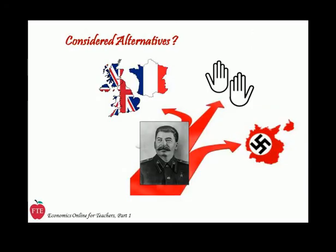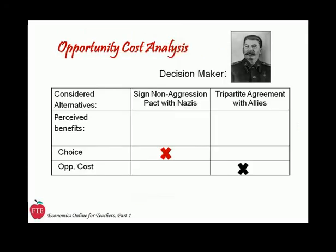While Stalin could have conceivably tried to keep the USSR out of the war entirely, he apparently didn't consider that one of his best alternatives. So in the late 1930s, he was simultaneously engaged in negotiations with Britain and France — the tripartite talks — and with Hitler's foreign minister Ribbentrop. Using our opportunity cost analysis grid with Stalin as the decision-maker, the considered alternatives are an agreement with the Nazis, or an agreement with Britain and France, the countries that would become the Allies in World War II. Using this analysis helps us avoid a common misperception that arises from knowing the ultimate outcome of his choice.